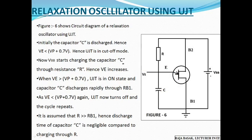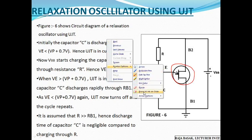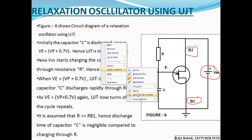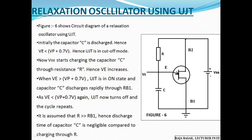The circuit diagram uses the UJT symbol. Base-2 and Base-1 are connected to VBB. A resistance R is connected at Base-2, and a capacitor is connected between the emitter and Base-1, which is connected to ground.